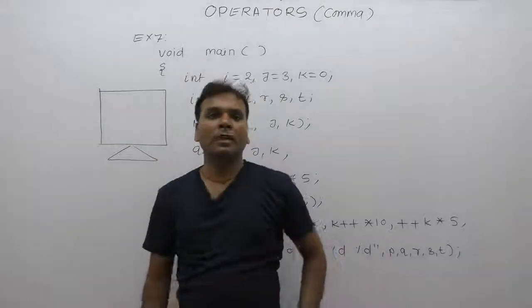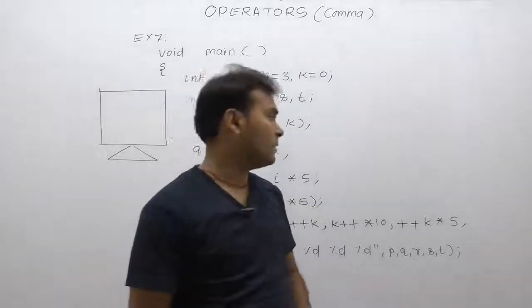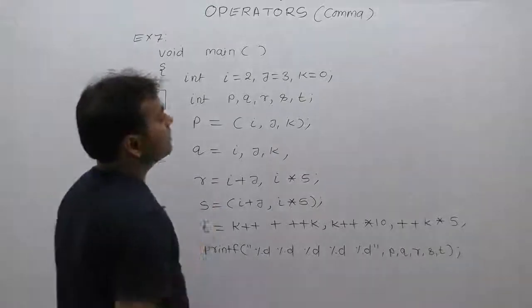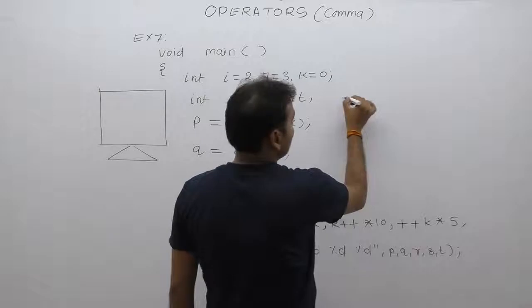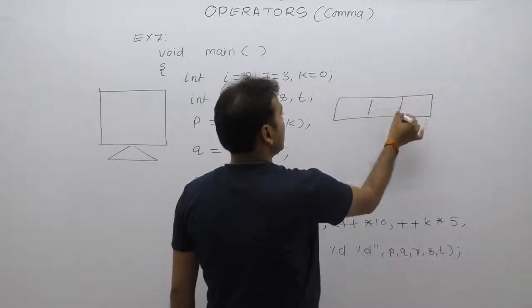Let's see another example of comma operators to test different flavors of comma operators. In this case we are declaring three variables initially: i, j, and k.